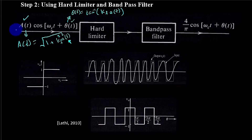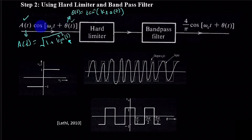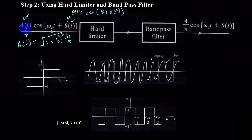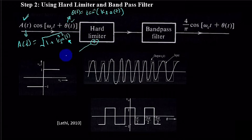The signal at the output of narrowband FM is both changing its amplitude with respect to time, and the argument of the cosine function, specifically θ(t), is also changing with respect to time. This is a big concern. So how do we fix it? Let us first try to fix A(t). For that we apply a block called a hard limiter — it is a very simple block, essentially like a signum function.